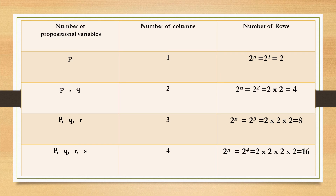Now suppose the expression has P, Q, R — three propositional variables — so the number of columns is 3 and rows is 2 raised to 3, which equals 8. If we have P, Q, R, S — four propositional variables — the number of columns is 4 and the number of rows is 2 raised to 4, which equals 2 × 2 × 2 × 2 = 16.